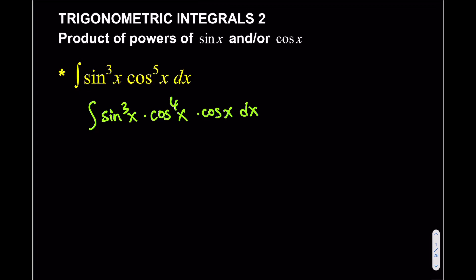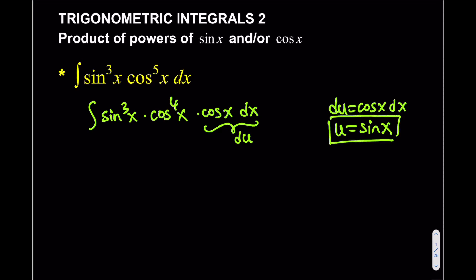The individual cosine x dx is going to be our du. So if du is cosine x dx, that means u must be sine x. I'm using substitution — not integration by parts, but going backwards with my choice. Now we know u equals sine x, so we have to express everything in terms of sine x. The cosine to the 4th power can be written as cosine squared squared, which equals (1 minus sine squared) squared.